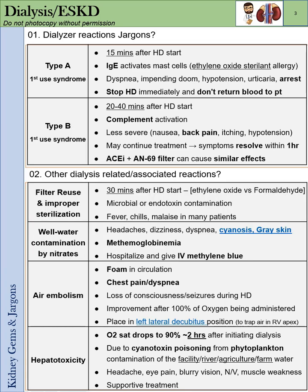Lastly, hepatotoxicity: oxygen drops to 90% about two hours after initiation of dialysis, due to cyanotoxin poisoning — usually from contamination by facility river, agriculture, and farm water. The patient presents with headache, eye pain, blurry vision, nausea, vomiting, and muscle weakness. Treatment is supportive.